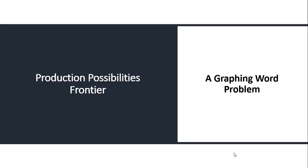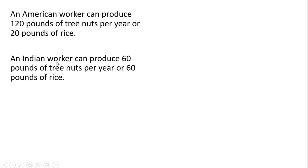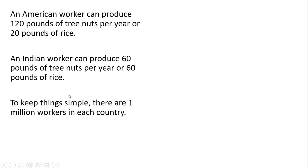In this video we're going to look at the production possibilities frontier by doing a graphing word problem. We're going to assume that an American worker can produce 120 pounds of tree nuts per year or 20 pounds of rice. And an Indian worker can produce either 60 pounds of tree nuts per year or 60 pounds of rice. To keep things simple, we're going to assume there are one million workers in each country.